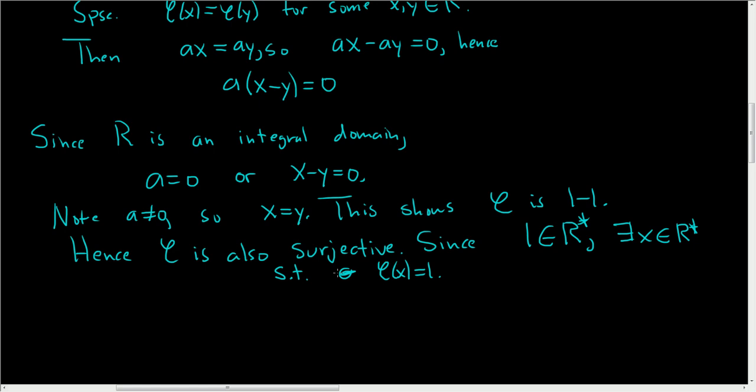And what does it mean for φ(x) equals one? It means that ax equals one, and this shows a is a unit.